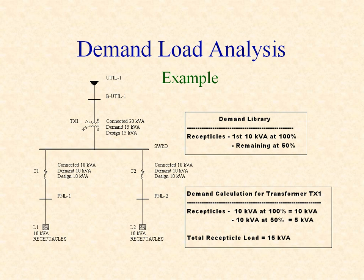The concept of diversity is best described by example. For this example, we have two parallel branches, each with 10 kVA of receptacle load. The connected load through transformer TX1 is therefore 20 kVA of receptacle load. However, with a demand load library that follows the National Electric Code diversity allowance, where the first 10 kVA of receptacle load is represented at 100 percent, and the remaining receptacle load is represented at 50 percent, the total demand load through transformer TX1 is only 15 kVA.